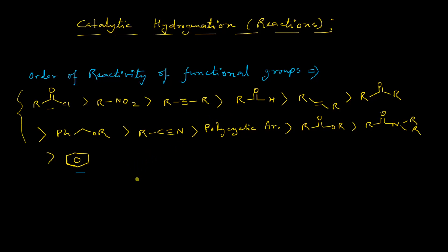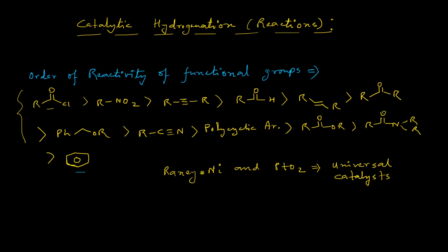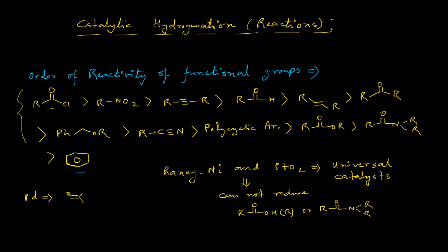If we consider the catalytic activity of the catalyst, then Raney nickel and platinum oxide can reduce almost any functional group and they are known as universal catalysts for catalytic hydrogenation reactions. However, they cannot reduce ester, amide, or carboxylic acid functional groups. Palladium catalysts are best for the catalytic hydrogenation of double bonds, triple bonds, and hydrogenolysis of benzylic compounds such as benzyl halides.